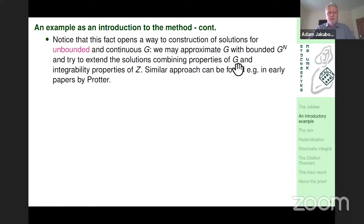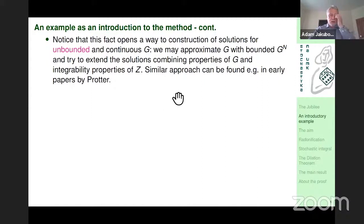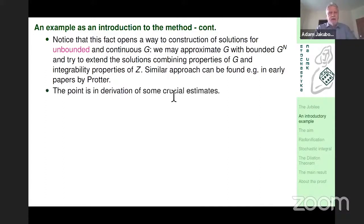Because our solution is obtained on the same space as a limit of discretizations, we can consider procedures of extending and gluing solutions. For that it is necessary to combine properties of g — for example, if we know there is linear growth and the integrator is a square-integrable martingale, we can extend such a solution. This approach was considered in early papers by Protter from 1977–78. It is possible to construct quite general solutions without touching the problem of uniqueness.